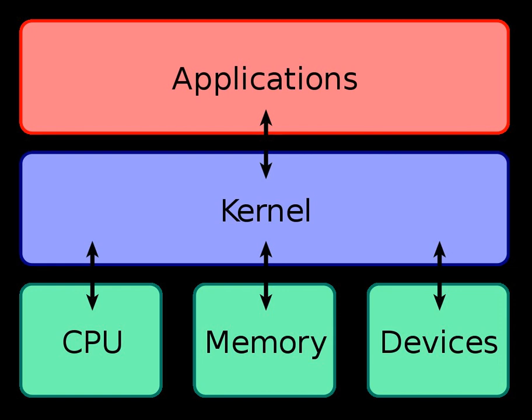Device drivers are used for such things as video cards, sound cards, printers, scanners, modems, and LAN cards. The common levels of abstraction of device drivers include, on the hardware side: interfacing directly, using a high-level interface, or using a lower-level device driver; and simulating work with hardware while doing something entirely different. On the software side: allowing the operating system direct access to hardware resources, implementing only primitives, implementing an interface for non-driver software, or implementing a language — sometimes high-level, such as PostScript.